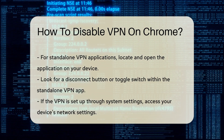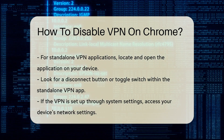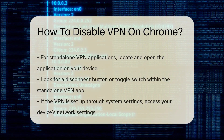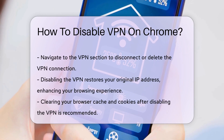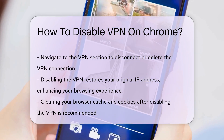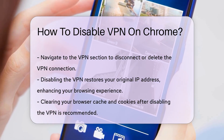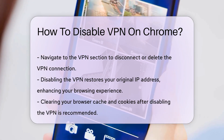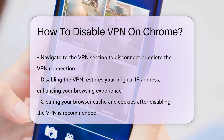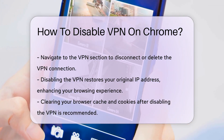For standalone VPN applications, navigate to the application on your device. Open the application and look for a disconnect button or toggle switch. This action will deactivate the VPN service and restore your original IP address.